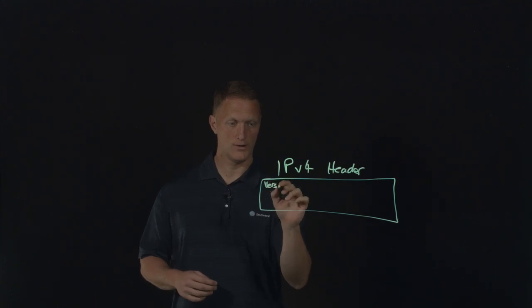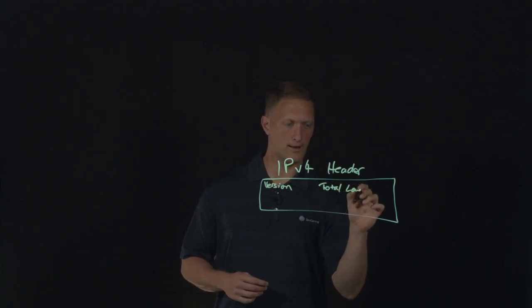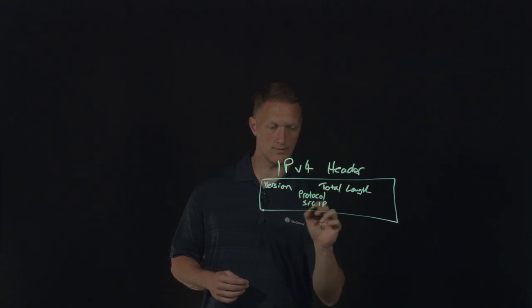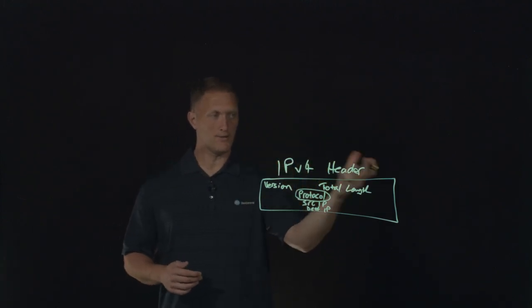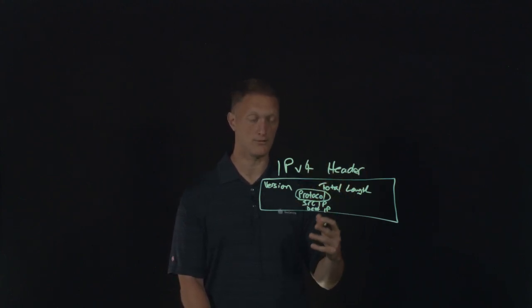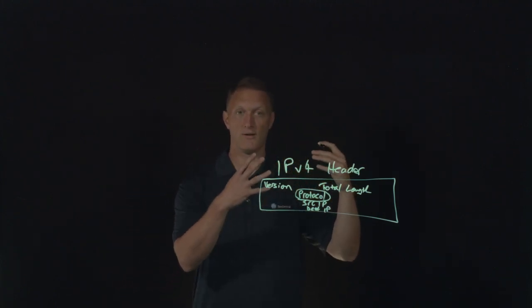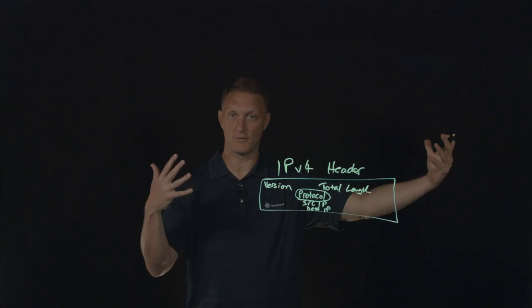So there's things like version number, there's things like total length of the packet. But one of the things is protocol. And then a couple of other ones are like source IP and destination IP. And I'm going to circle this protocol right here. The protocol field in an IPv4 header, IPv6 headers have this as well, this same idea. It's called something slightly different, but the same idea is true. The protocol field in the IP header defines what's called or what's described as the next level protocol or the protocol of the payload that this IP packet is going to have.